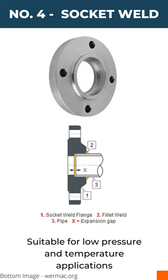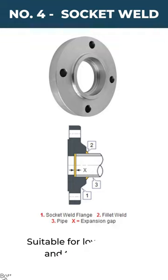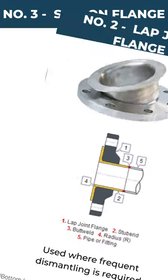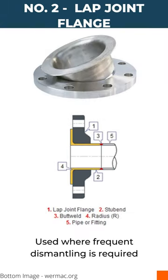Number four is the socket weld flange. This flange is suitable for low pressure and temperature applications. Number three is the slip on flange — this flange is available in large sizes and is used in low pressure applications.